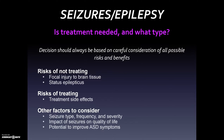Regarding whether treatment is needed and what type: the decision should always be based on careful consideration of all possible risks and benefits. Risks of not treating include focal injury to brain tissue and status epilepticus — a prolonged seizure that may cause brain tissue injury and be difficult to stop. Risks of treating are primarily side effects. Other factors include seizure type, frequency, severity, impact on quality of life, and the potential of certain treatments to also improve autism symptoms.